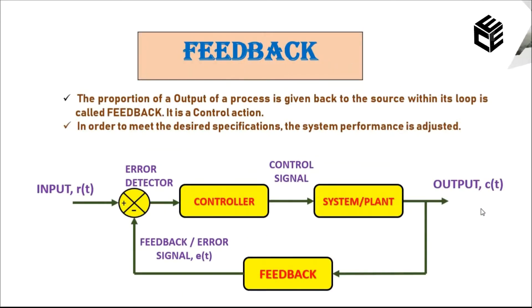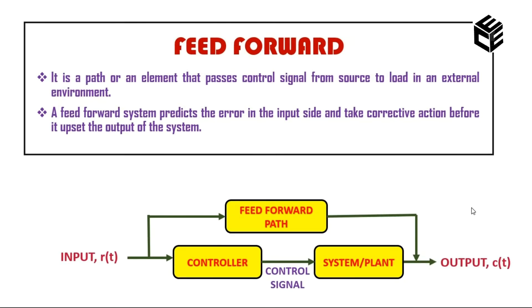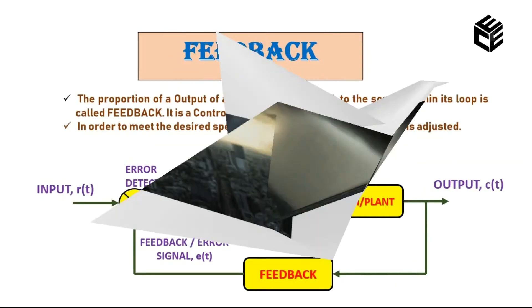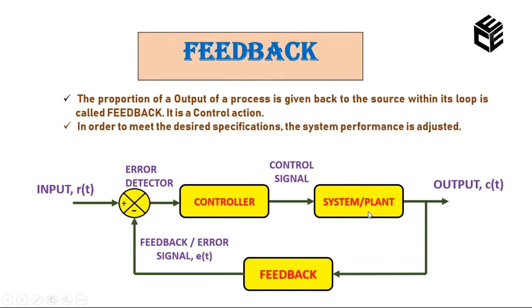Now let's see what is a feedback system and compare it with the feedforward system. In the feedforward system we have a controller, a system or plant, and a feedforward path in the forward direction. In a feedback system, the same pattern exists — a controller and a system — but a portion of the output is taken back as a feedback signal or error signal to the input. We require a feedback system in order to meet the desired specification at the output.